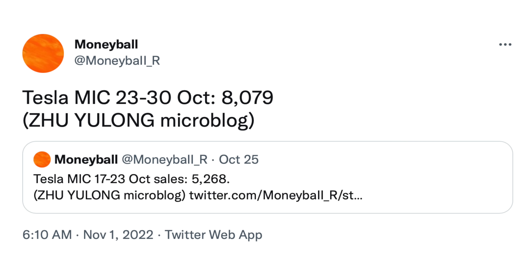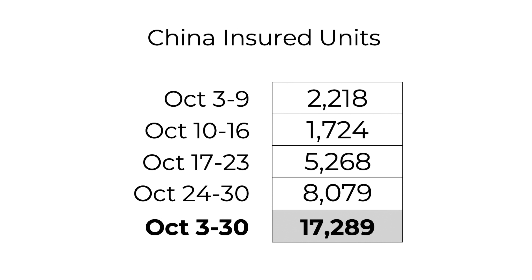Next, an update on Tesla in China. Moneyball on Twitter is reporting that China insured units for the last week of October — October 24th through the 30th — came in at 8,079 vehicles. Combining that with previous reports, October 3rd through the 30th is about 17,300. That gives us a ballpark of around 20,000 vehicles for domestic sales during October. If it is 20,000, that would be the highest first month of the quarter for domestic sales in China so far. Numbers should pick up significantly for November and December, especially following the price cuts on October 24th.